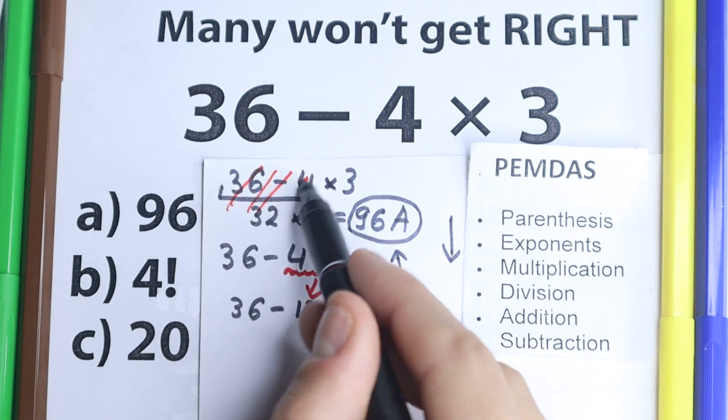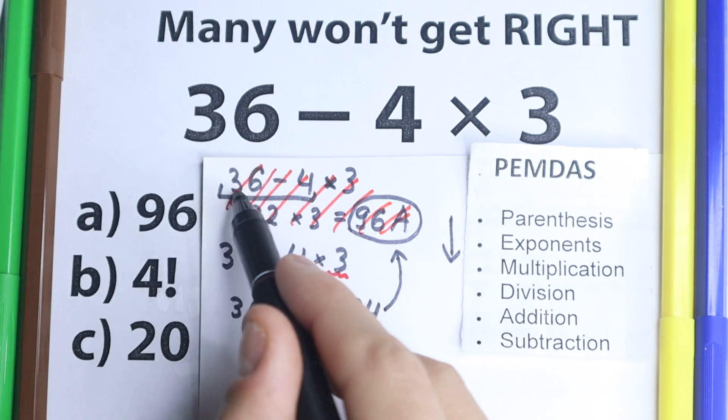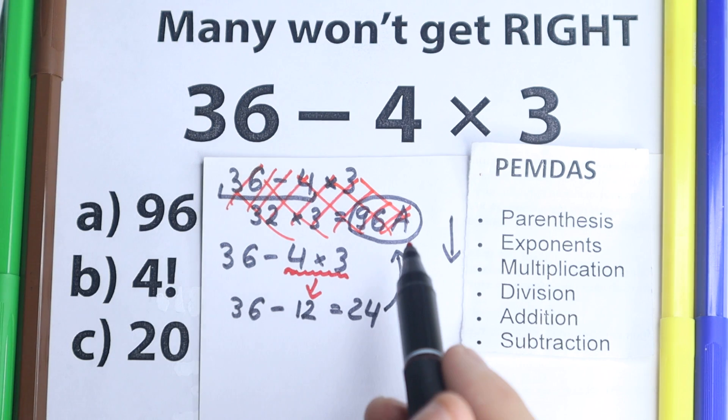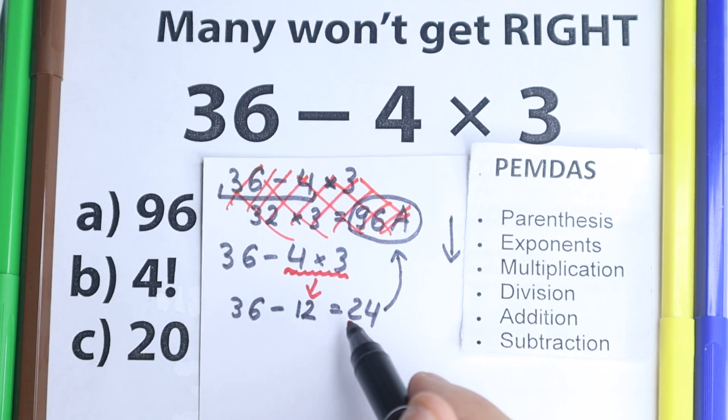And I wanted to cancel this solution, because this is a very bad solution right here. And a correct solution according to correct order of operation, this is 24.